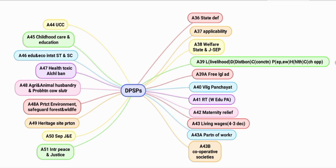Article 39: to learn it, use the mnemonic 'LDC PHC' — Least Development Countries and Primary Health Care. L stands for livelihood, D for distribution, C for concentration (protection of concentration). EP EW means equal pay and equal work. H stands for health, C for children's opportunities in education.